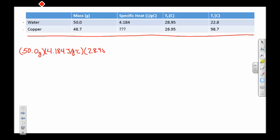That's the water side. That's going to be equal to the heat that's lost by copper, and that had a mass of 48.7 grams. We actually don't know its specific heat—we're trying to calculate that.